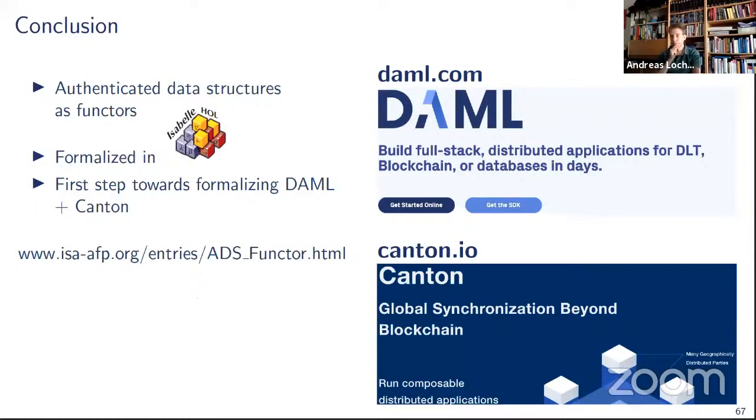So, in summary, I've talked about how to think of authenticated data structures as functors. The whole thing has been formalized in Isabelle and is available in the AFP. So what we've done more precisely is we can't mechanize the meta theory if we want to go for a shallow embedding. So what we've done is we've formalized the abstract theorems with an axiomatized functor. And then essentially copy and pasted those developments respectively 12 times to get the implementation for the Canton transaction structures. One could automate that, but we haven't yet spent the effort on that. And of course, that's the first step. So it's formalizing the whole world of DAML and Canton and actually reasoning about the protocol and not just the data structures used internally.